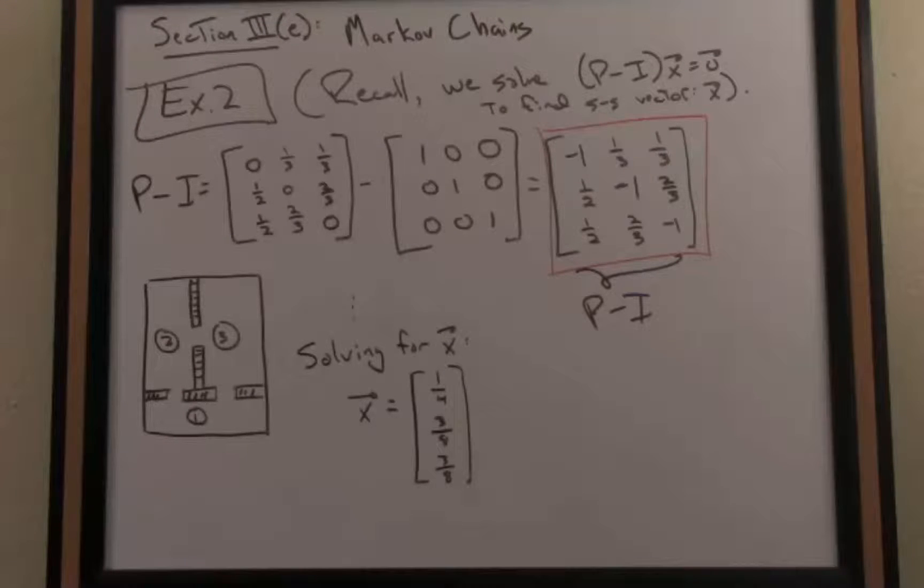Because this is a steady state vector, it remains fixed. It's a fixed point when I multiply by the matrix P on the left. In a sense, at some point, eventually, our Markov chain turns into an infinite sequence of just the steady state vectors.